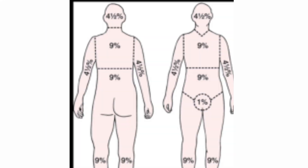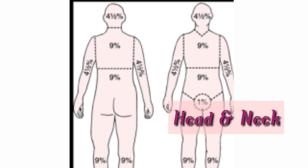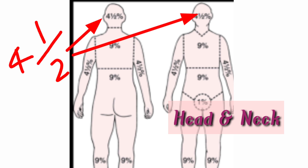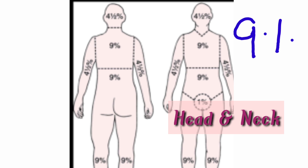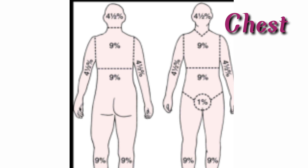Let's see the rule of 9. Here the picture shows the posterior and anterior part of our body. We will start from head to toe. First we will start from head and neck: we can give 4.5% in the posterior part and 4.5% in the anterior part, so total we will have 9%. If the patient comes with a burn in the head and neck area — both posterior and anterior part burned — we can give 9%.